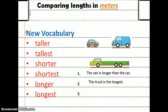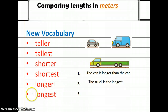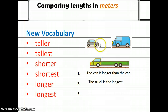We have new vocabulary words we're learning today — these are the words we use to compare lengths: taller, tallest, shorter, shortest, longer, and longest. Here we have three automobiles: the car, the van, and the truck.